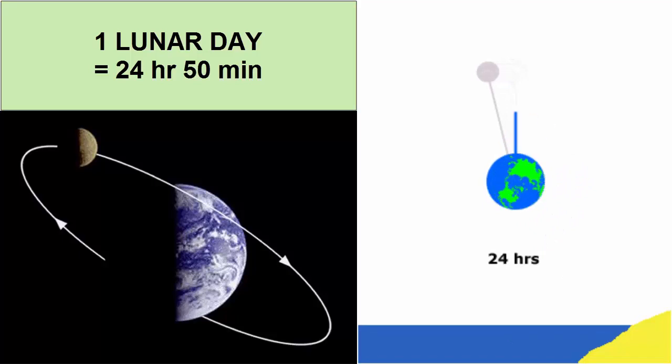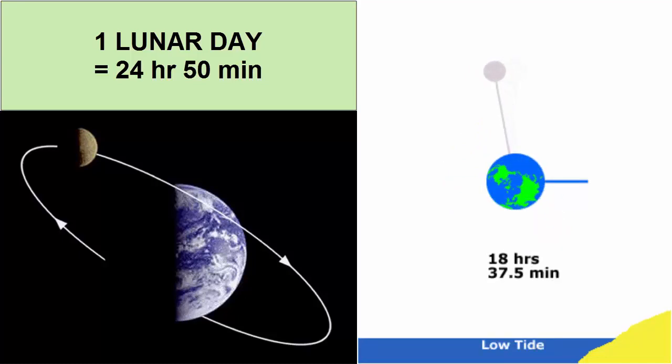What does that mean? After the Earth has rotated once relative to the Sun, 24 hours, it has to rotate another 50 minutes to catch up with the Moon, which during that 24 hours moved one twenty-ninth its way around its orbit around the Earth. 24 hours and 50 minutes is a lunar day.